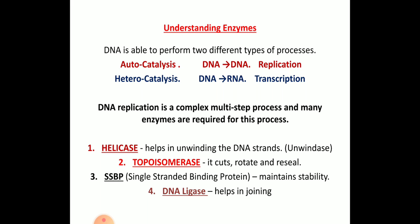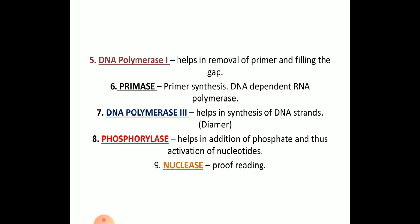DNA ligase helps in the joining process — it is the molecular stitcher. DNA polymerase 1 helps in the removal of primers and also in filling the gap. Primers are small segments of RNA. Primase helps in synthesizing the primer and is a DNA-dependent RNA polymerase — a very important enzyme. DNA polymerase 3 is also called a dimer because it helps in synthesis of the DNA strand bi-directionally.